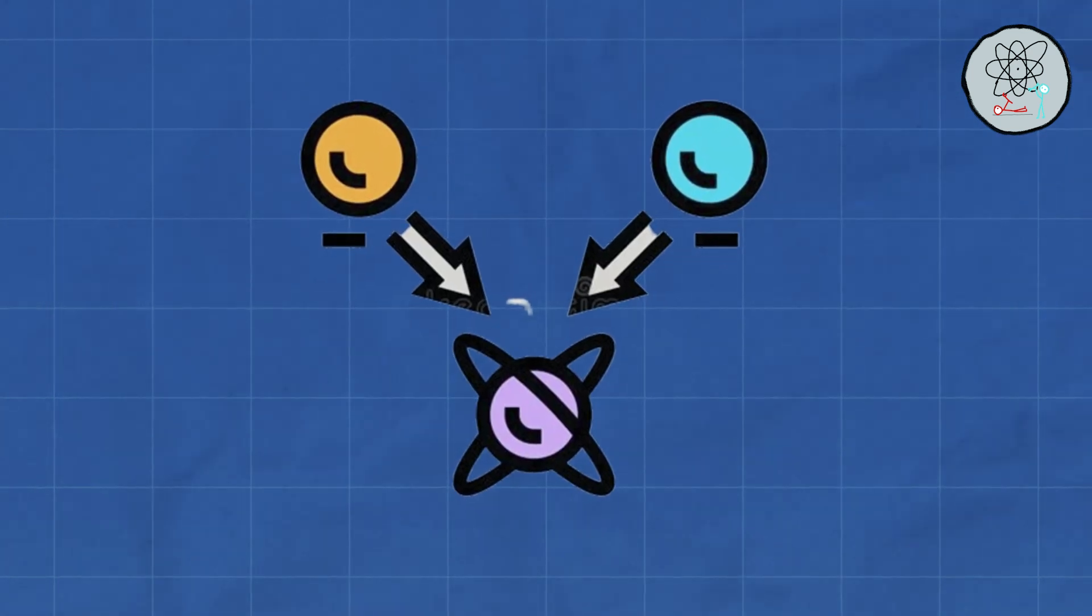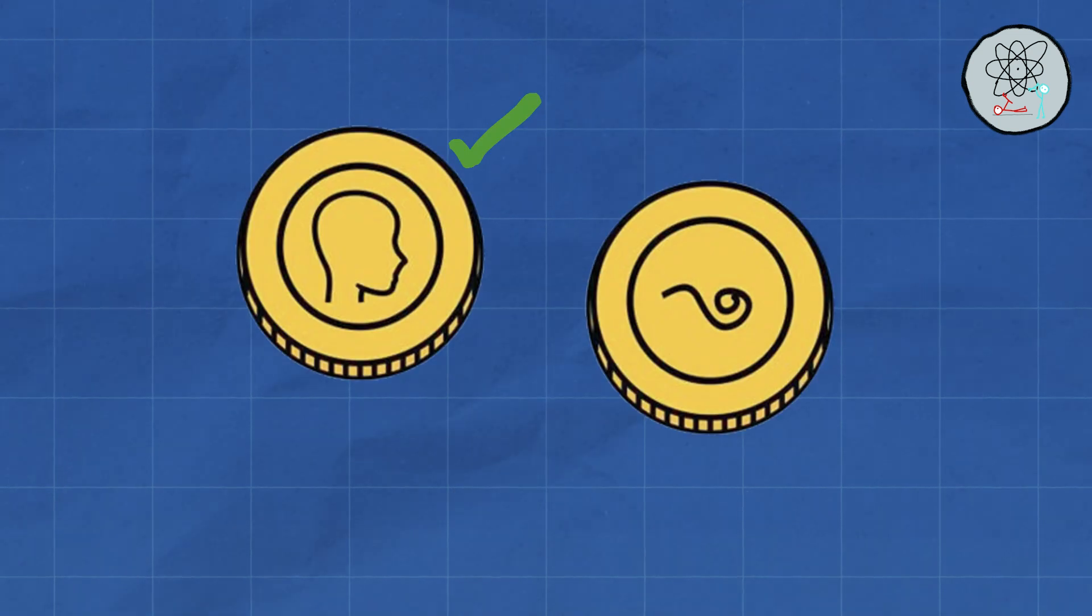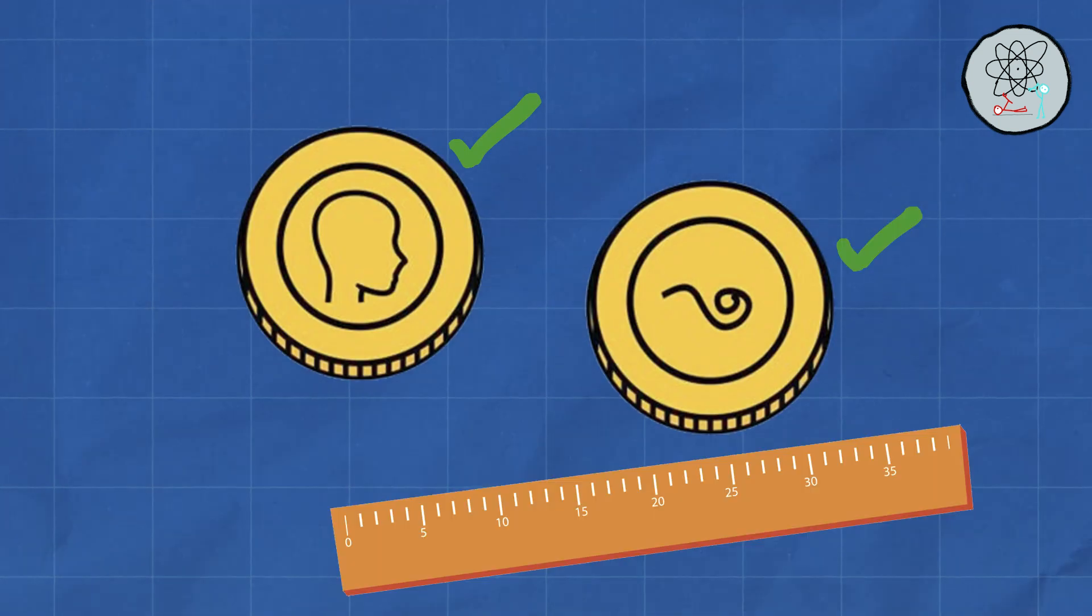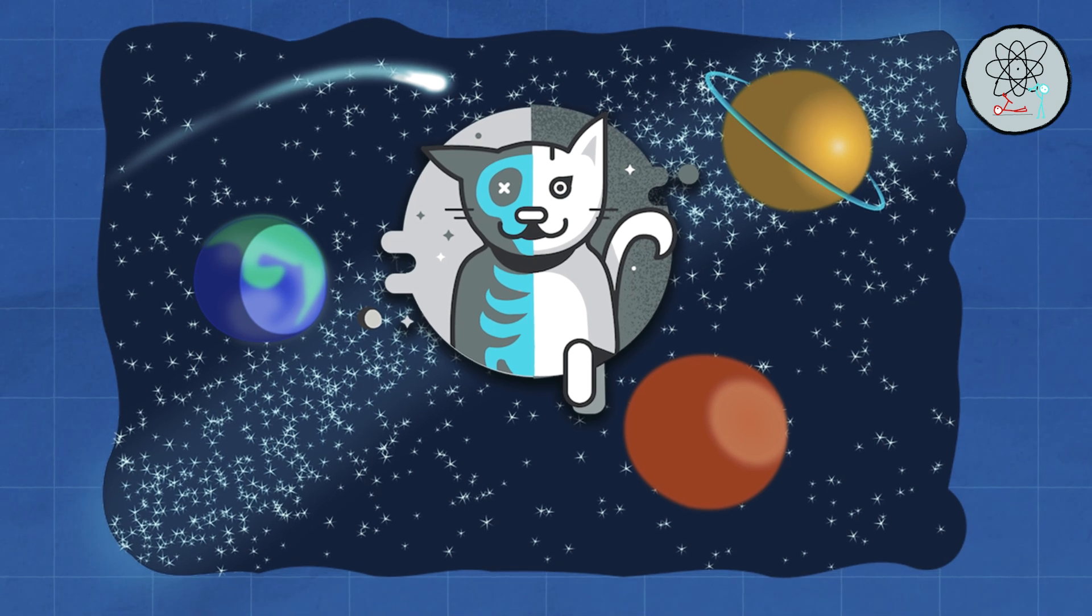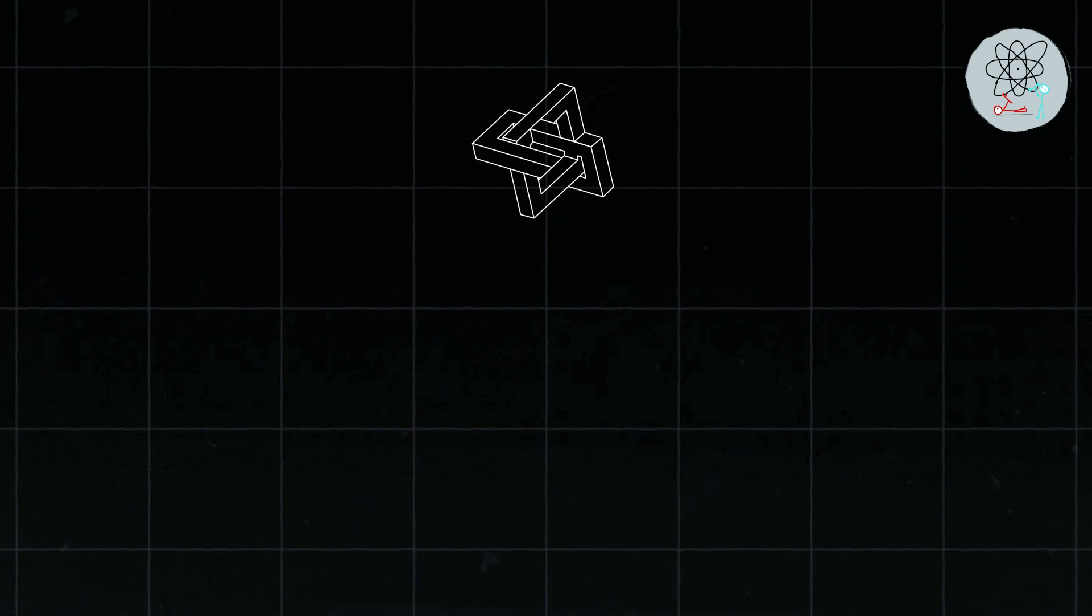Here, particles can exist in a state called superposition, meaning they can be both heads and tails at the same time, until you actually measure them. It's like the cosmic Schrodinger's cat situation, which also brings us to a paradox. To learn more, check out our video on Paradoxes.